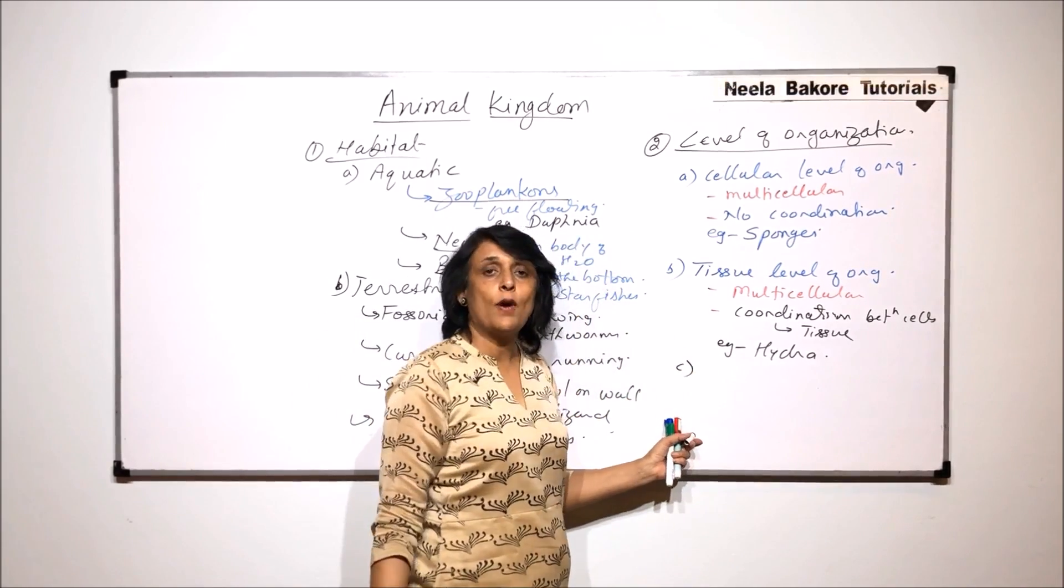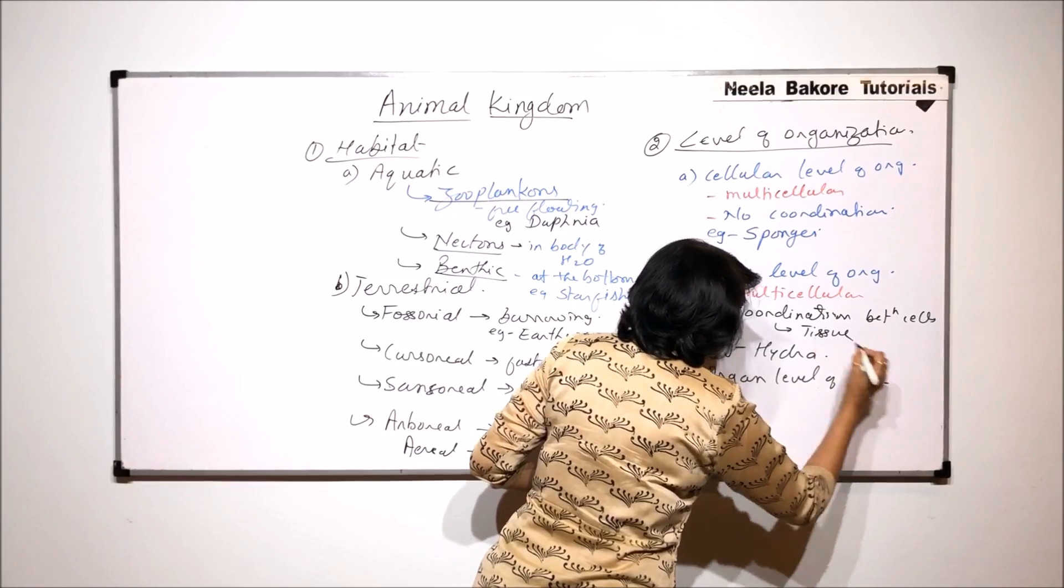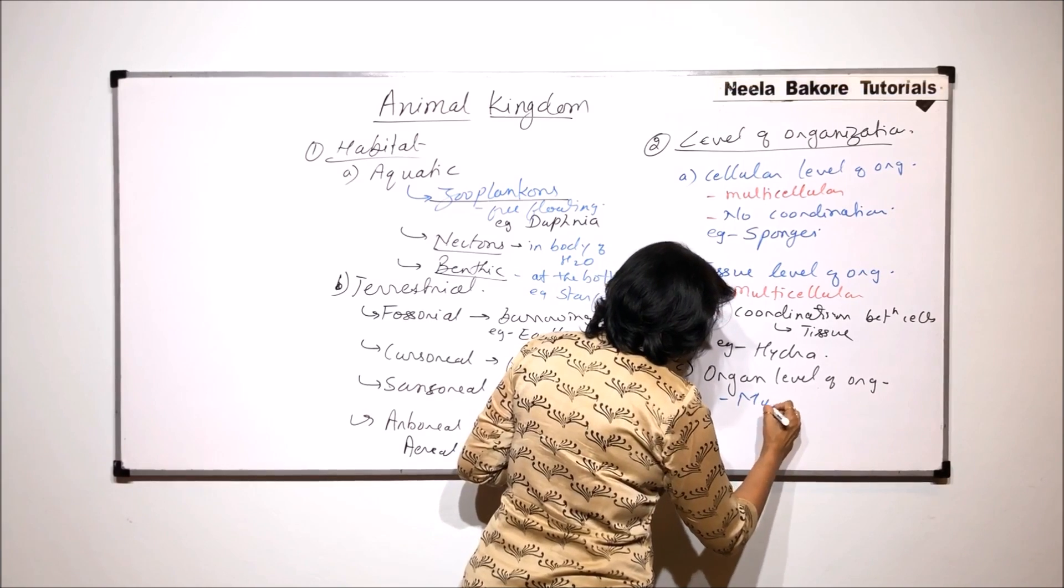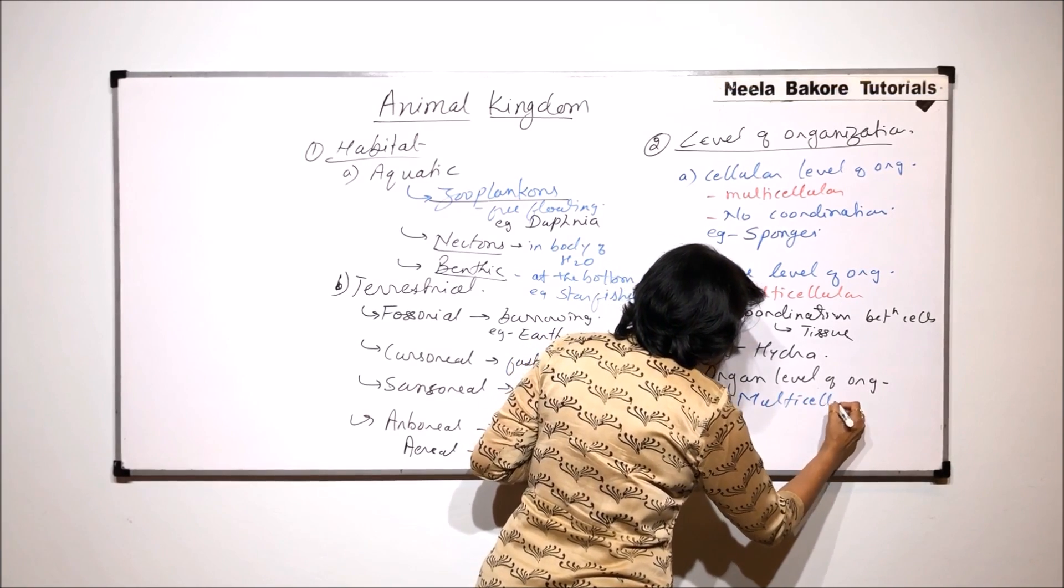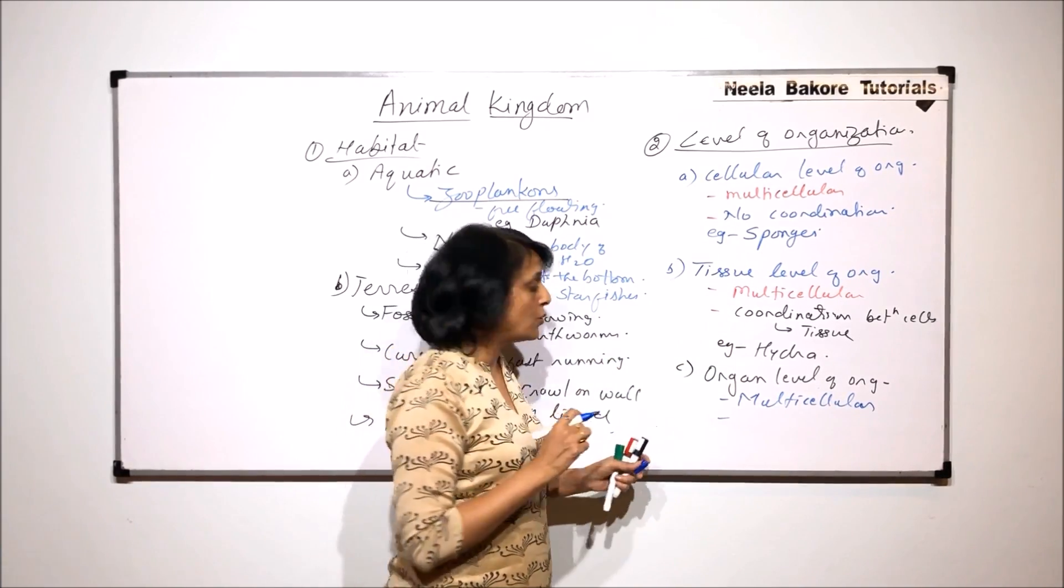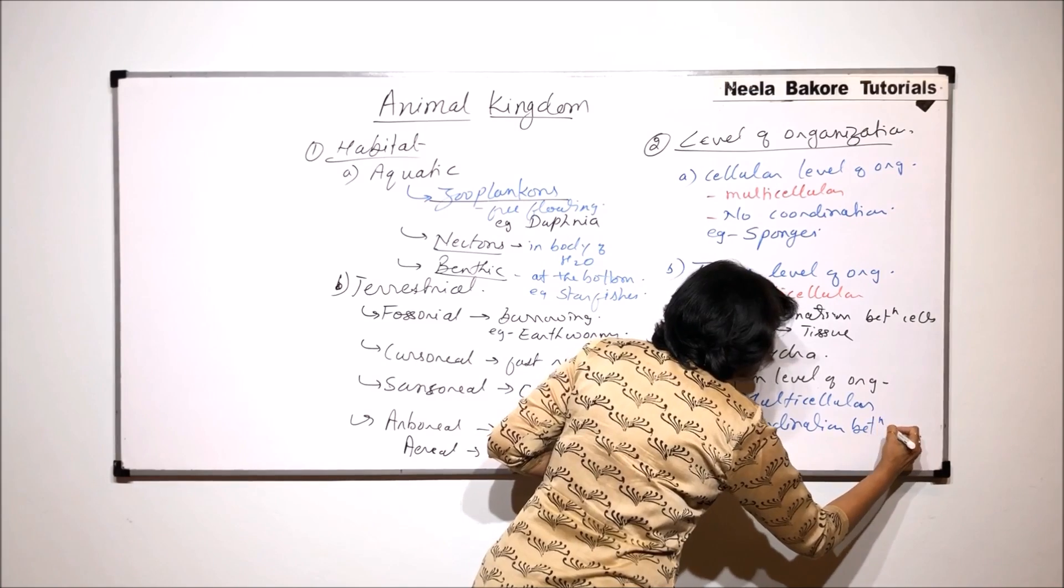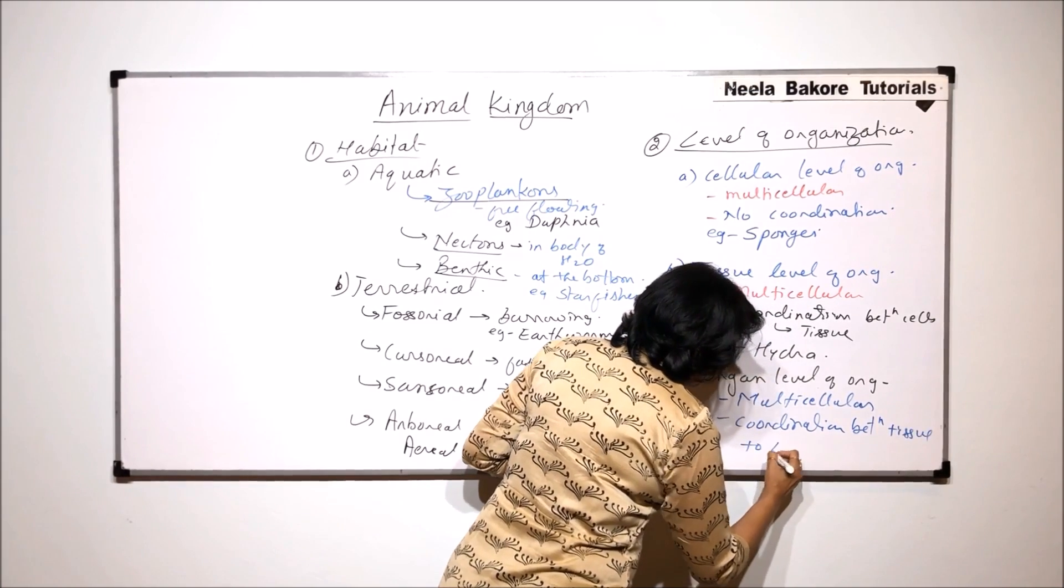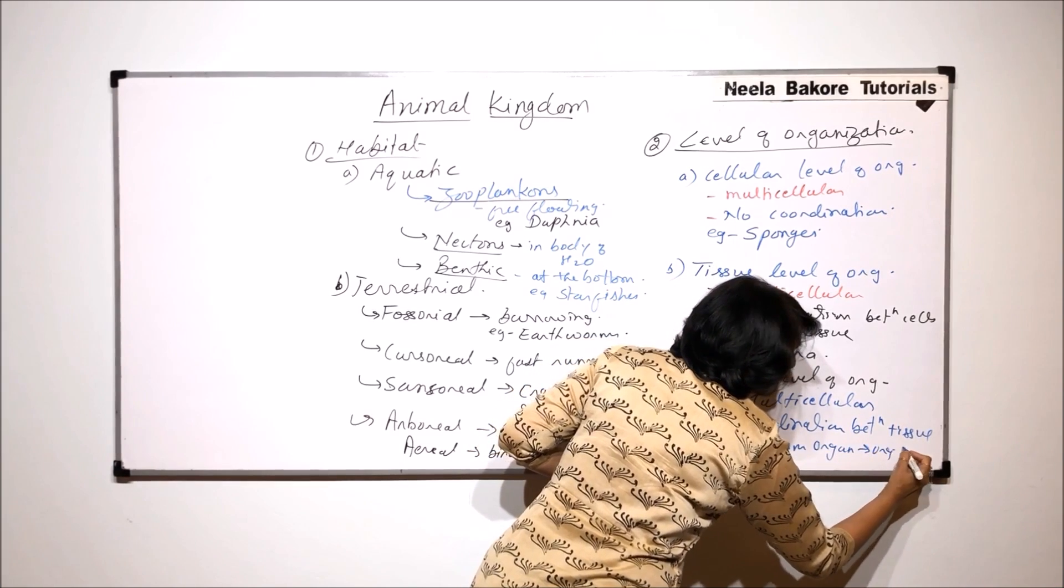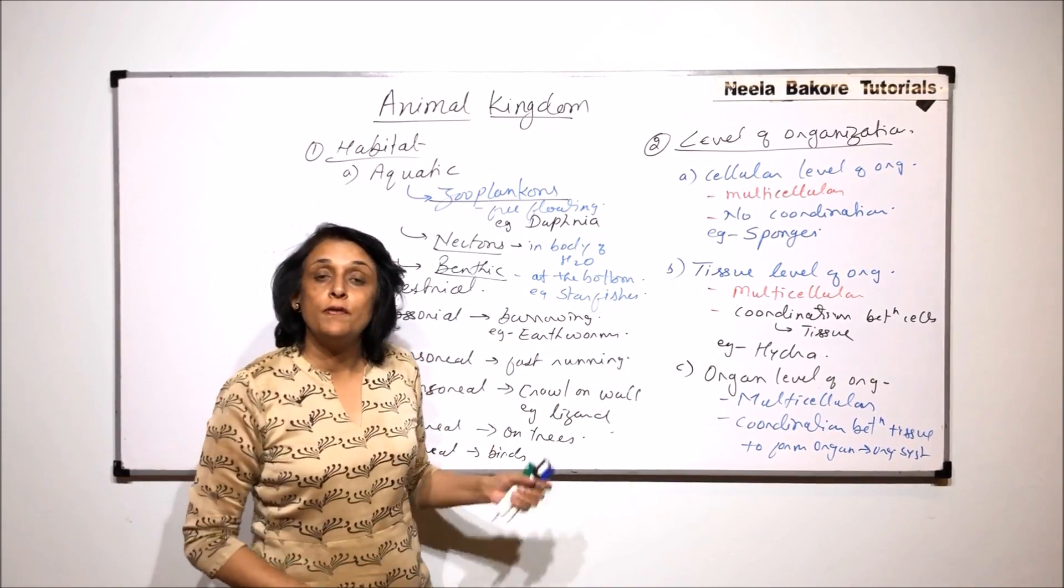The third level of organization is called the organ level of organization. In organ level of organization, the animal is multicellular and there is coordination between the tissues to form an organ. So coordination between tissues to form an organ. This is the highest level of organization where there is division of labor also.